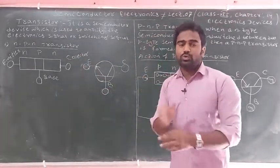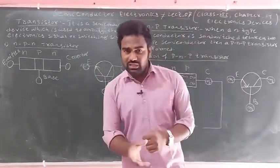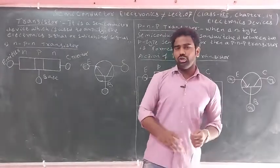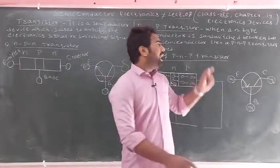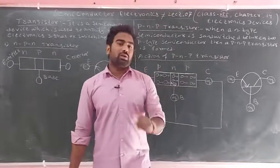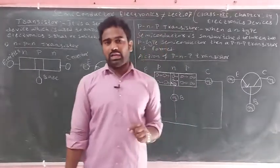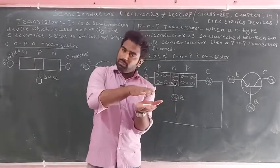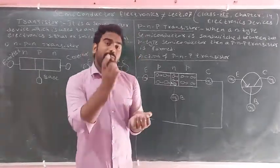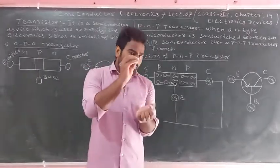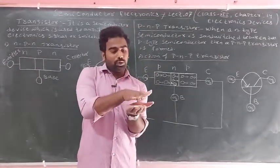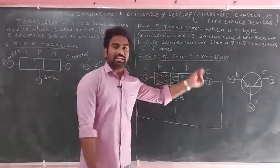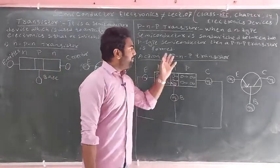The transistor is used to amplify electronic signals, act as a switching signal, and amplify electric power. There are generally two types of transistors: NPN transistor and PNP transistor. Think of it like a sandwich — the semiconductor layers are like bread with a filling in the middle.